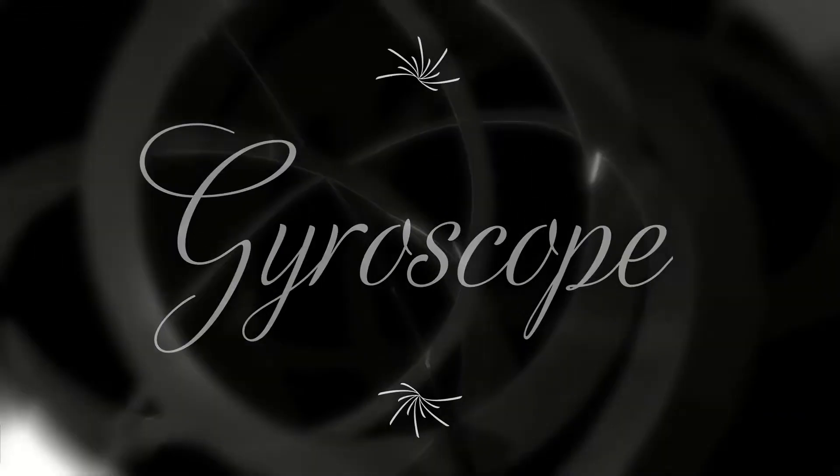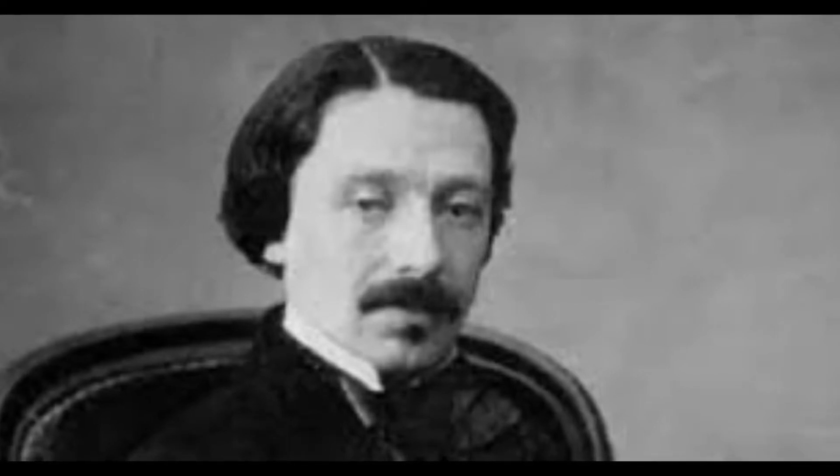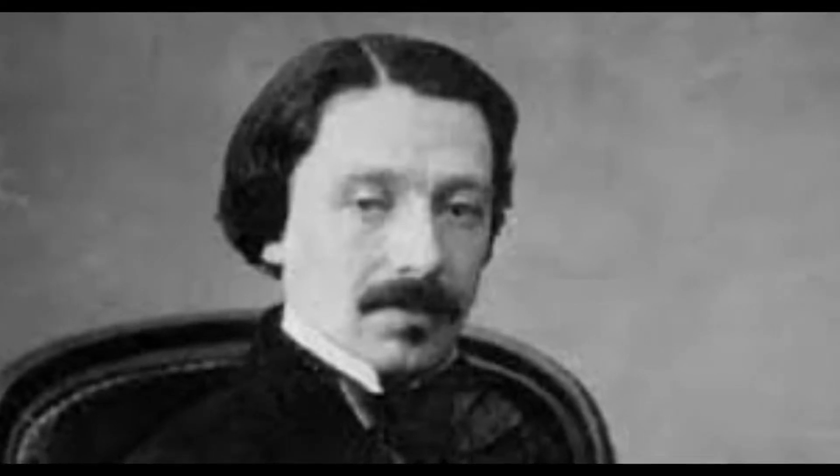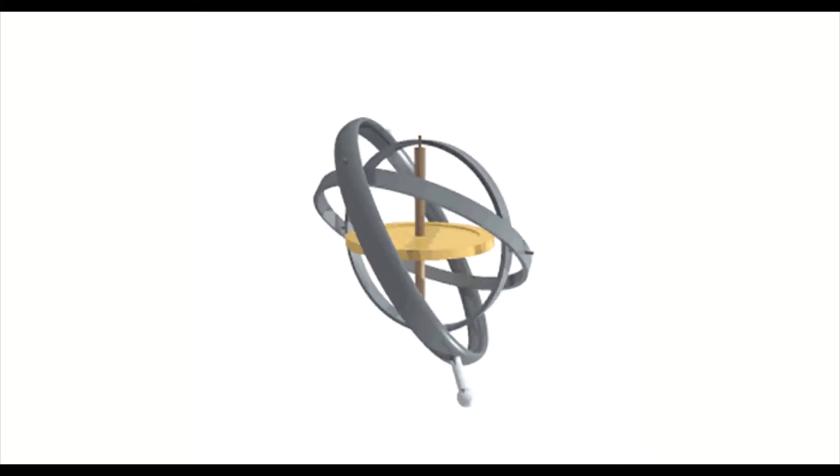Léon Foucault was a French physicist born in 1819. He's the first to patent the gyroscope, a design that could tell the plane of Earth's rotation depending on its location's latitude. He was born in 1819, and in 1852, he invented the first known gyroscope.